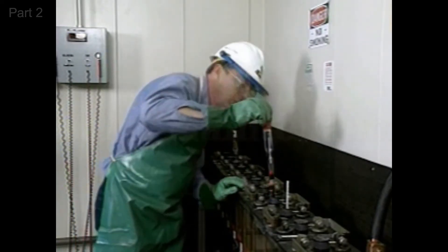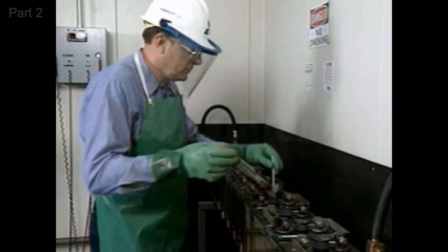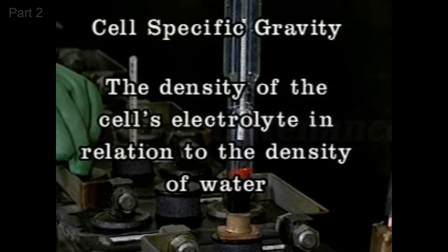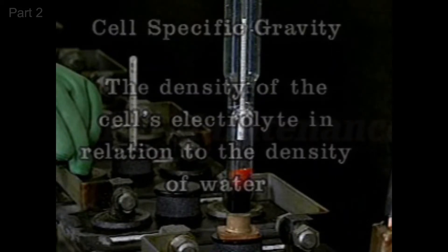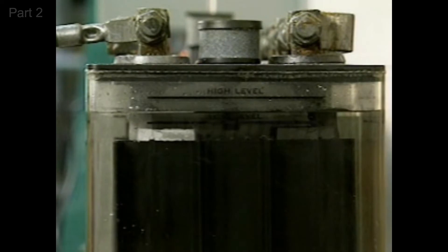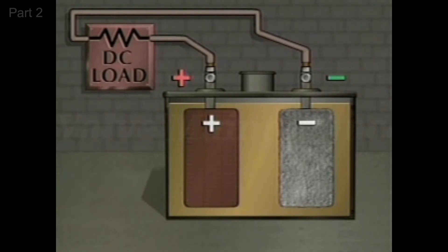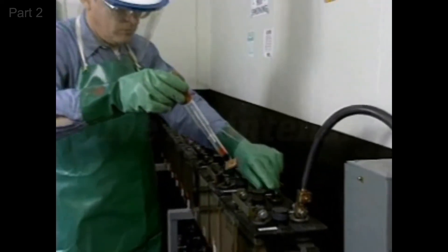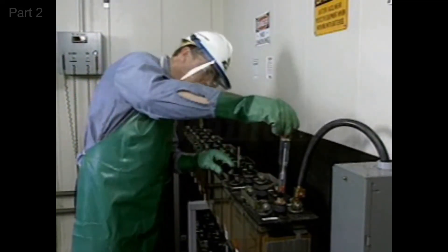Another indication of a battery state of charge is the specific gravity of the cells. The specific gravity of a cell is defined as the density of the cell's electrolyte in relation to the density of water. The electrolyte in a cell is composed of sulfuric acid and water. As a cell is discharged, sulfuric acid leaves the electrolyte and combines with the lead in the plates, decreasing the concentration of sulfuric acid in the electrolyte. So a test that reflects the concentration of sulfuric acid in the electrolyte will show the state of charge of that cell. That test is for the specific gravity of the electrolyte.